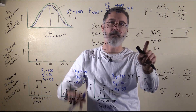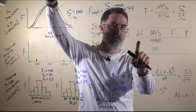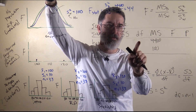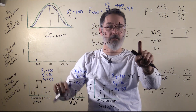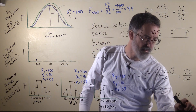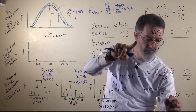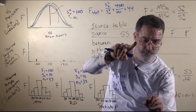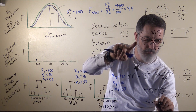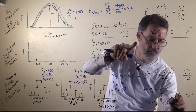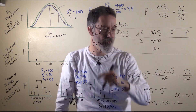We already calculated the variance between, and we can calculate the degrees of freedom between really easily. In fact, we did that earlier when we calculated the variance between these three means. Degrees of freedom is n minus 1, and there were 1, 2, 3 means. So this degrees of freedom equals the number of groups minus 1 — 3 groups minus 1 — so that equals 2. There are 2 degrees of freedom between.